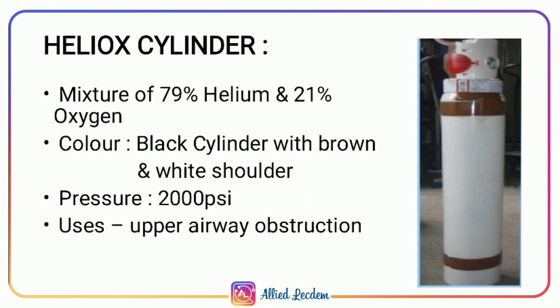The Heliox cylinder contains a mixture of 79% helium and 21% oxygen. The color coding is a black body with brown and white shoulder. The pressure is 2000 psi. It is used in cases of upper airway obstruction because helium, being less dense than air or oxygen, travels through narrowed or obstructed airways easily.